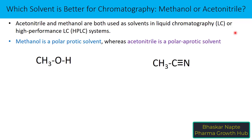Now let's talk about acetonitrile. Acetonitrile is polar but an aprotic solvent. Why is acetonitrile polar? Because it contains the electronegative atom nitrogen, which creates a slight positive charge on the adjacent carbon and a slight negative charge on the nitrogen, making it a polar compound. But why is it aprotic? Because there is no hydrogen directly connected to the electronegative atom — nitrogen is connected to carbon, not hydrogen. Therefore, this is called an aprotic solvent, and an aprotic compound cannot donate hydrogen to form hydrogen bonds.